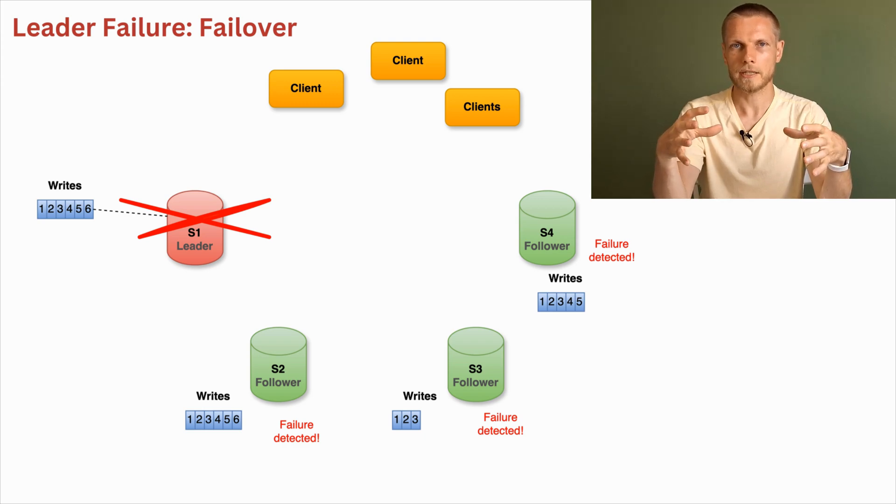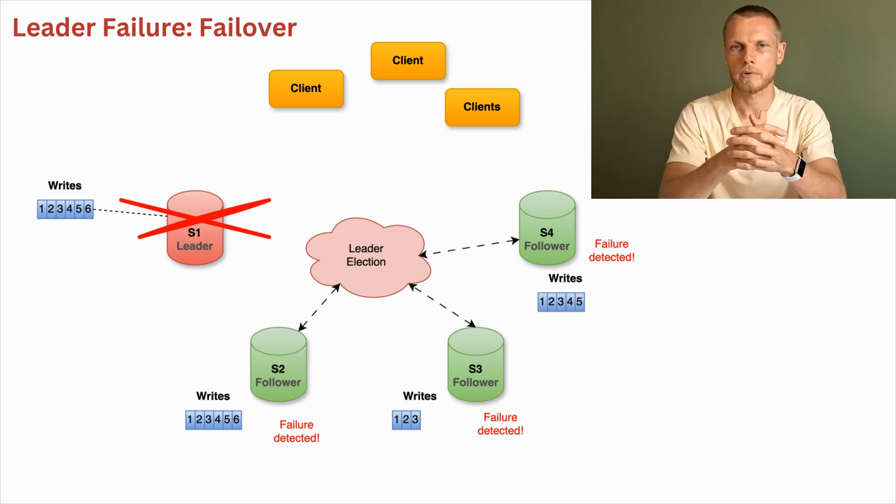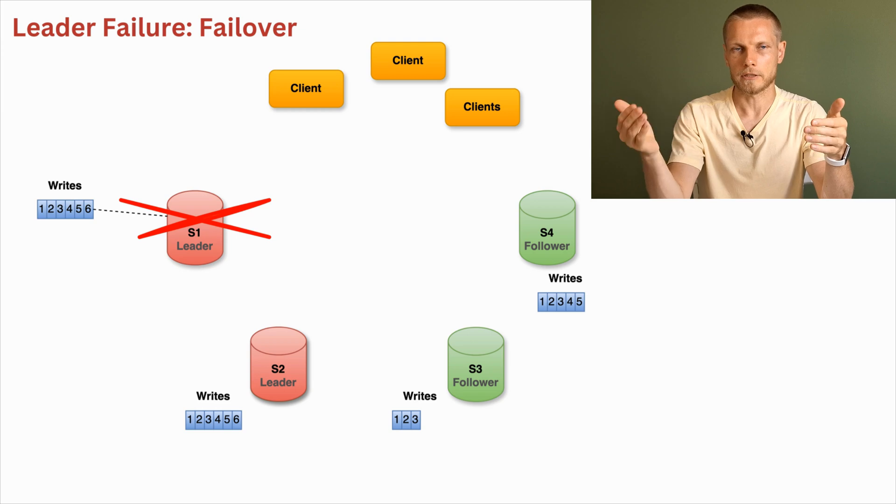After followers detected leader's failure, they initiate so-called leader election algorithm, which is kind of complex and there are a few different election algorithms available. In the description of this video, there is a link to my website fidyanin.com and you can see what exact leader election algorithm is used by which real database system. As a result, for example, S2 was promoted to become a new leader.